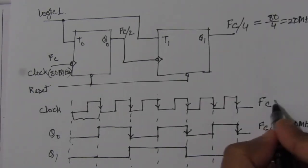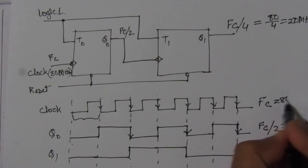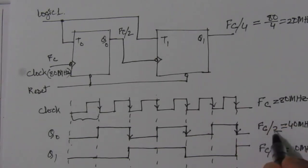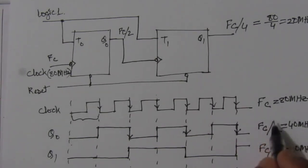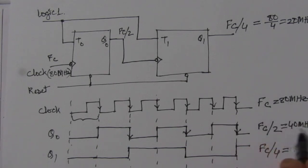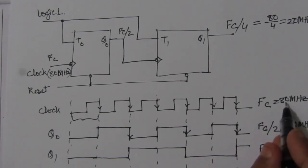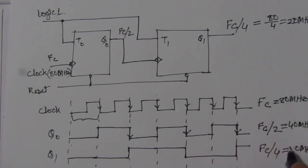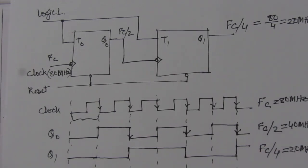Fc is 80 MHz. Q0 has frequency Fc/2 = 40 MHz. Q1 has frequency Fc/4 = 80/4 = 20 MHz. This is the required clock frequency as per the given question.